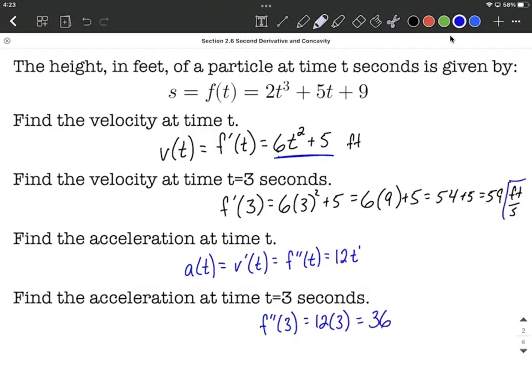On our units, because it was feet per second for velocity, it's going to be feet per second divided by seconds, which works out to be feet per second squared.